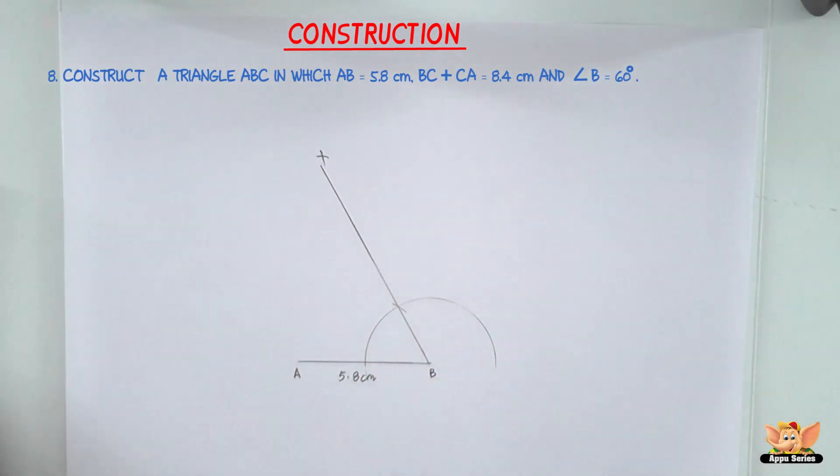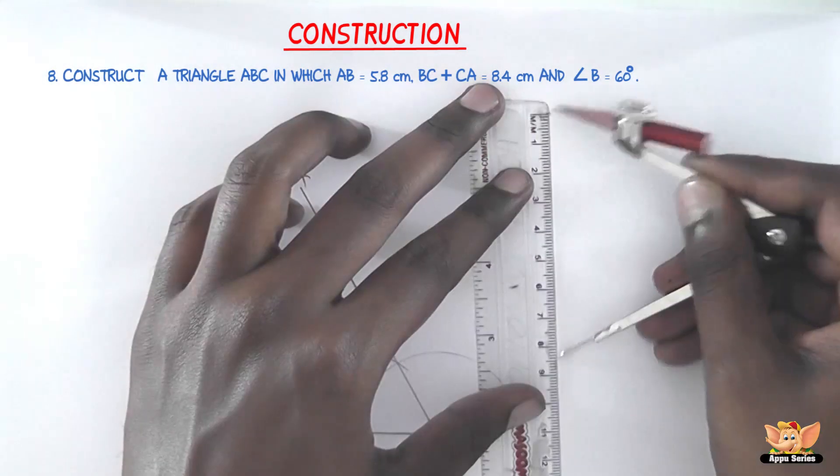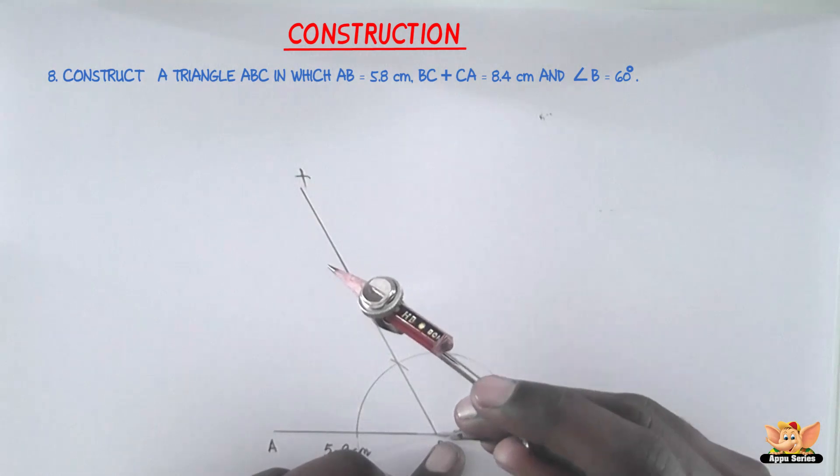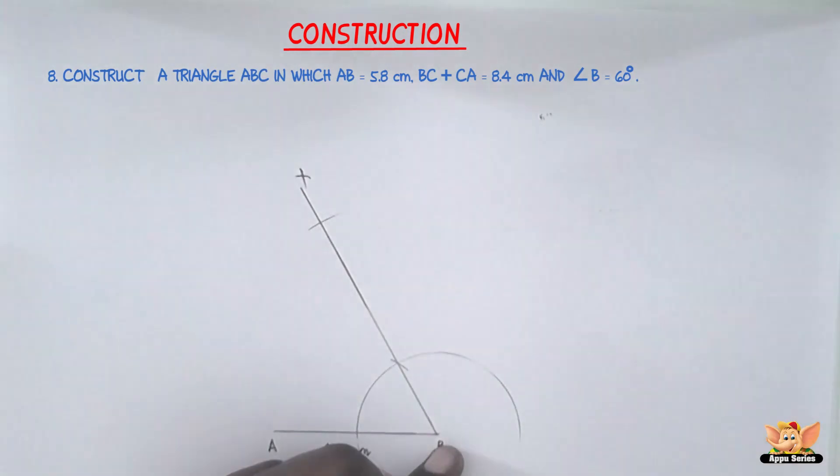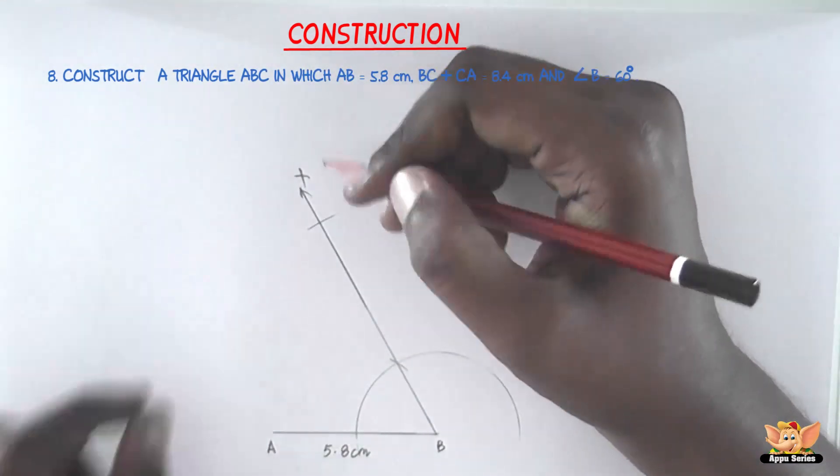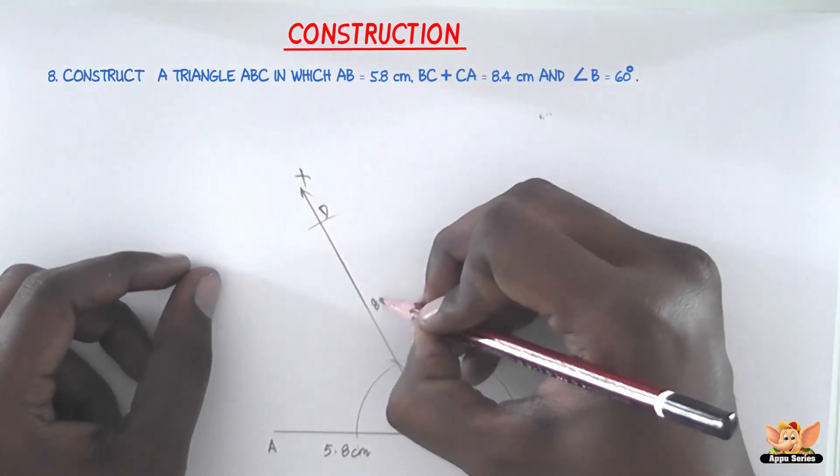The next step involves the sum of the other two sides, BC plus CA equals 8.4 cm. Measure 8.4 cm on the compass. Keeping the compass at B, cut line segment BX at 8.4 cm. Let's name this point D.